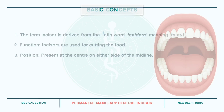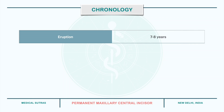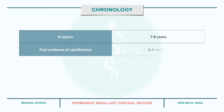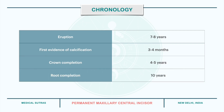Now coming to the chronology. The permanent maxillary central incisor erupts at the age of 7 to 8 years. It is the third permanent tooth to erupt, after the permanent first molar and lower central incisor. The first evidence of calcification is seen at 3 to 4 months. The crown formation is completed by the age of 4 to 5 years, and the root is completed by 10 years.